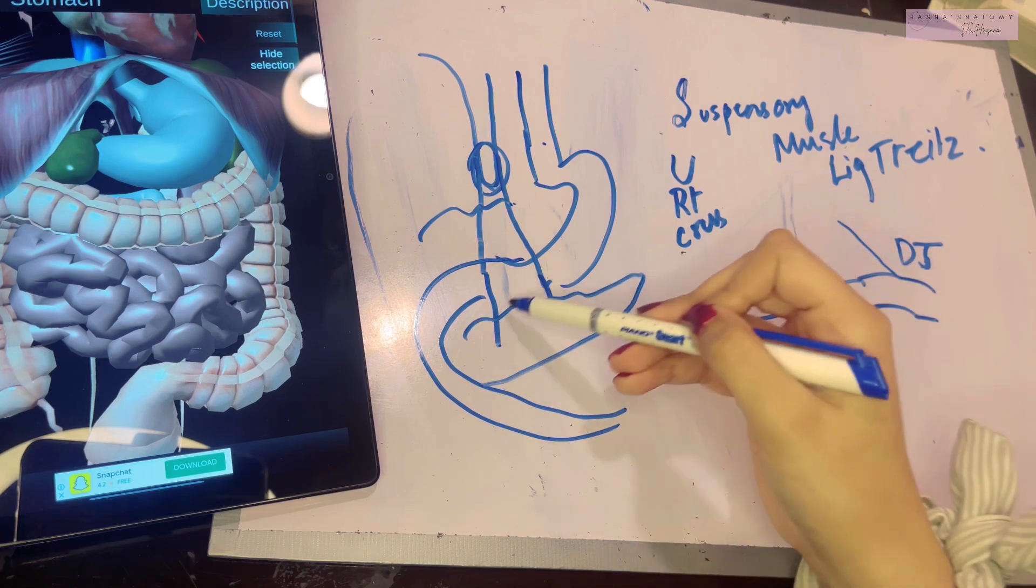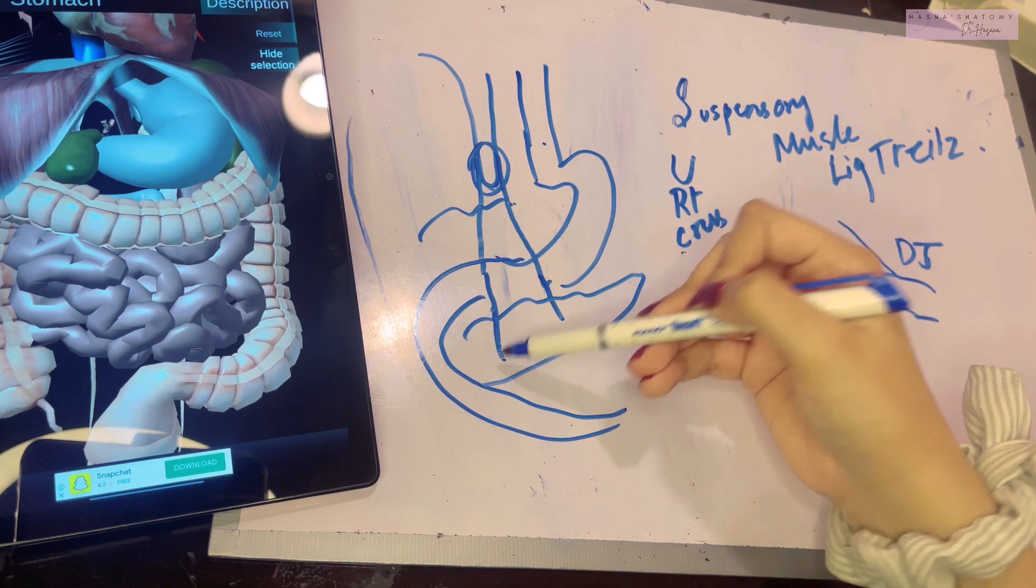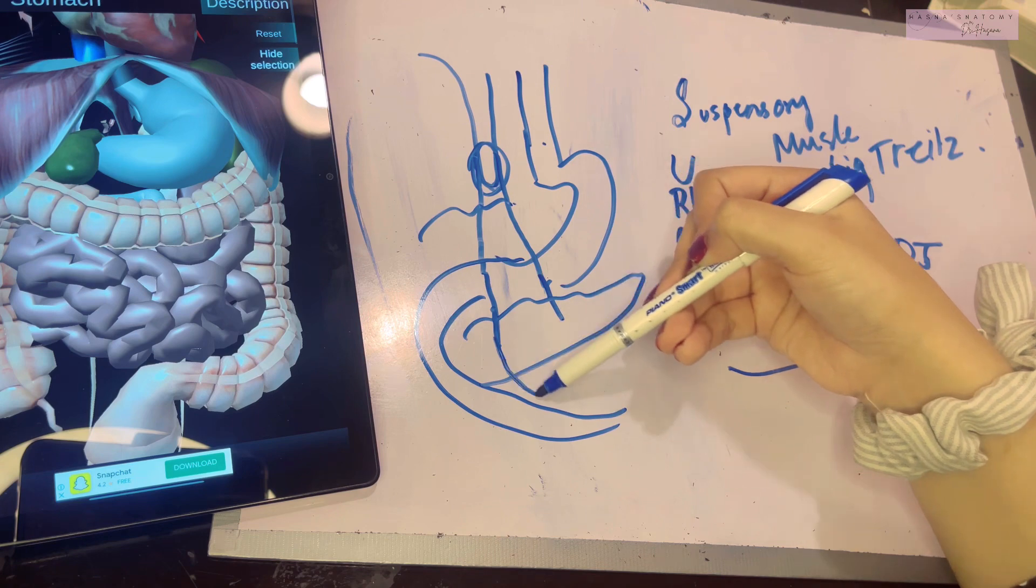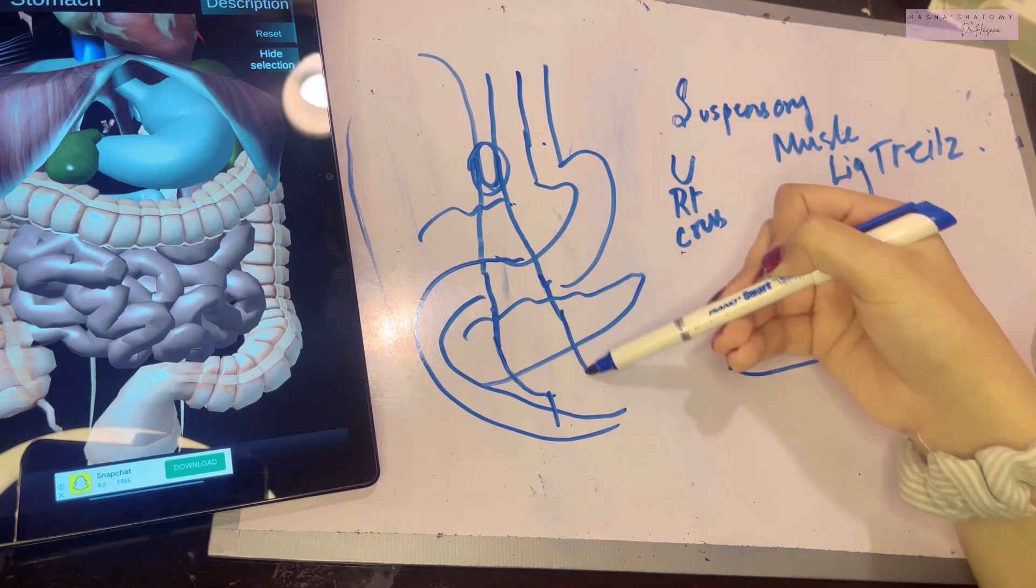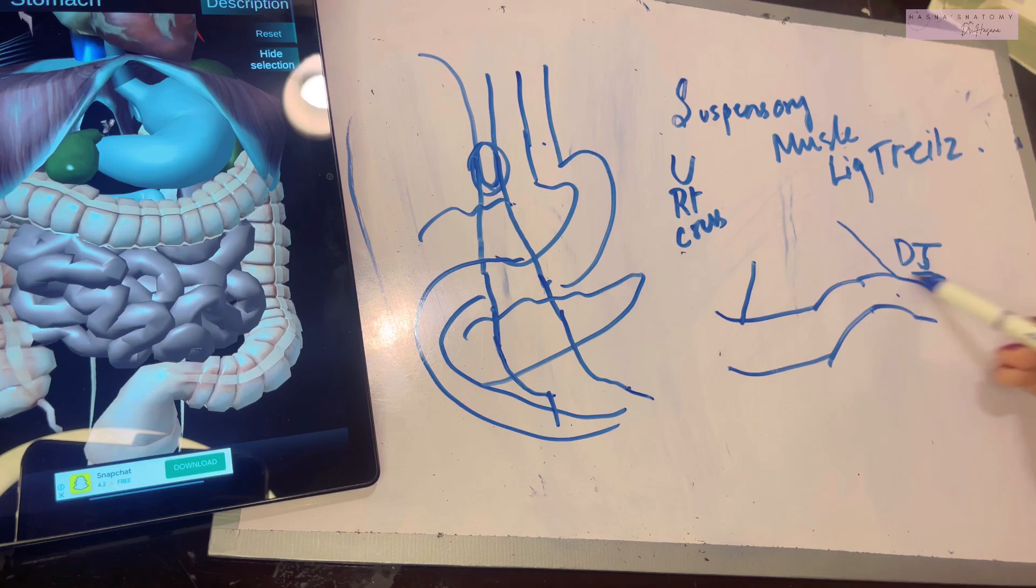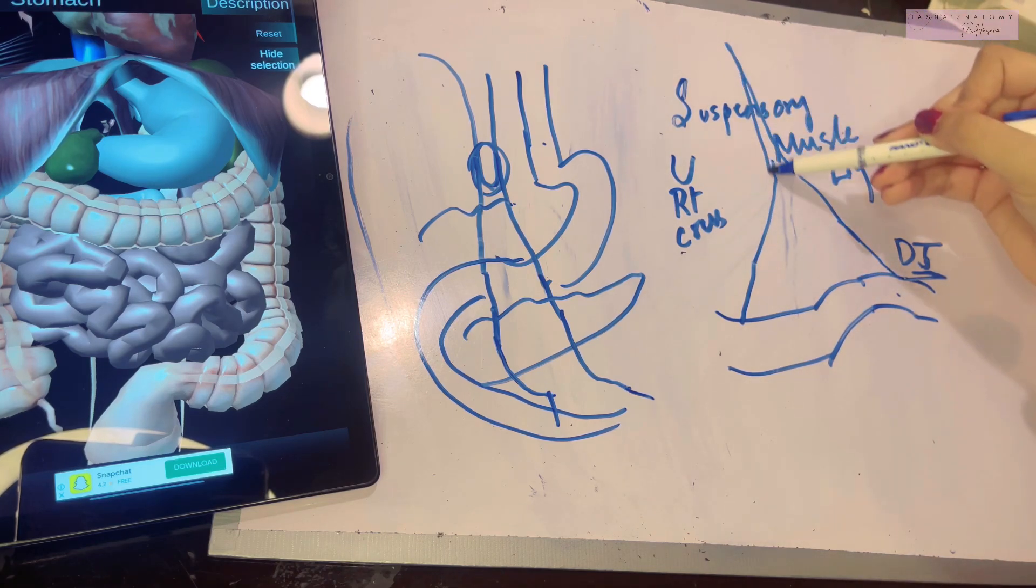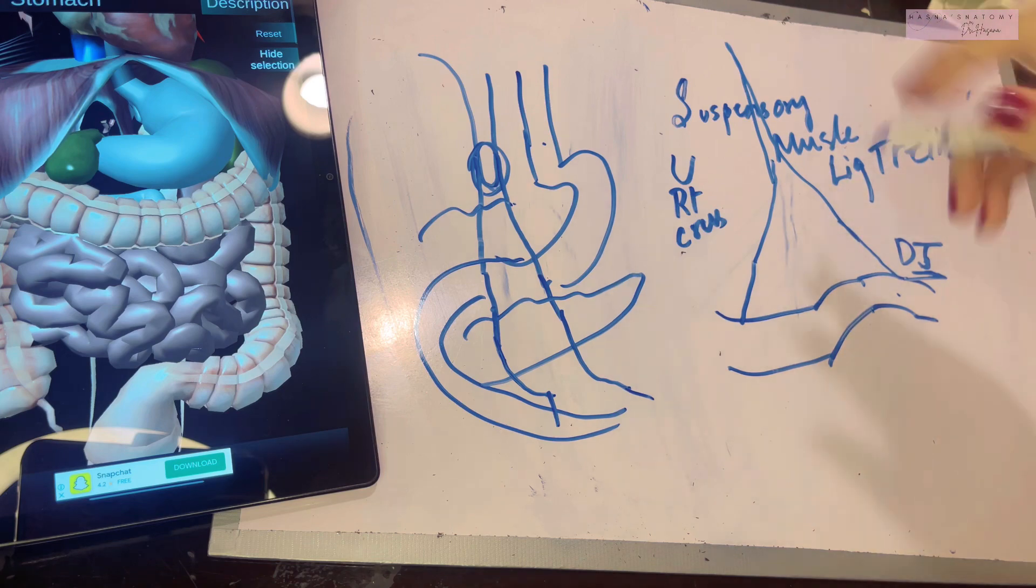This is the duodenum, and this is the pancreas. This ligament runs downwards, posterior to the pancreas, and goes ahead and attaches to the third part, fourth part, and the duodenojejunal flexure. And what is the purpose of this ligament that is coming all the way from above? It is to suspend this part.